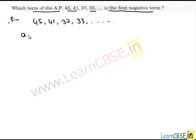The first term of the AP is a, which is 45. We know that the common difference is the difference between a term and its preceding term. Here we take the second term, which gives us 41 minus 45, equal to negative 4. Therefore, d equals negative 4 and a equals 45.